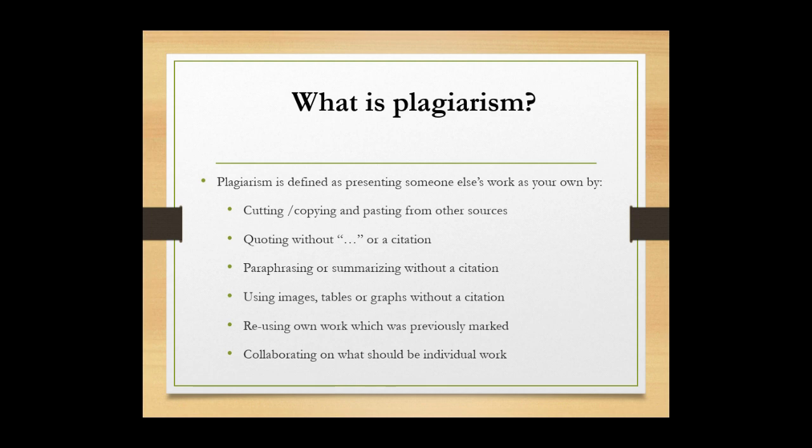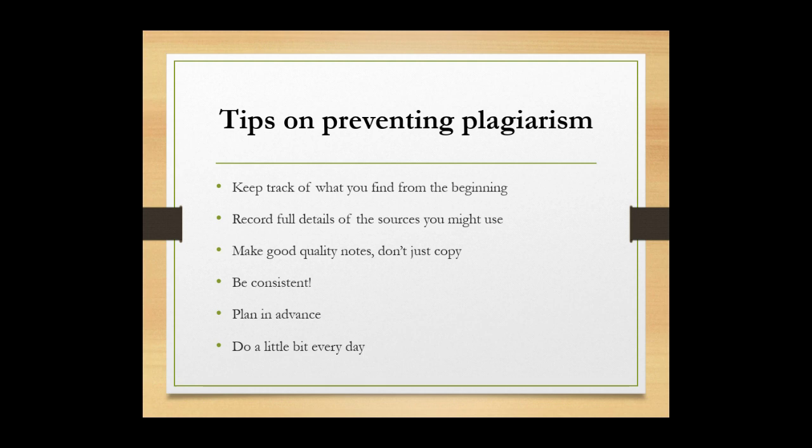So how should we avoid plagiarism? There are some tips that, if you follow them, you will avoid plagiarism. Keep track of what you find from the beginning. If you are doing a literature review and you find articles that will help your study, keep track of them. Record the full details of the sources you might use. Make good quality notes, but do not copy — put things in summaries. Then be consistent, plan in advance, and do a little bit every day.